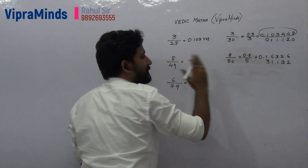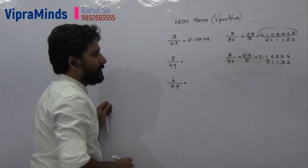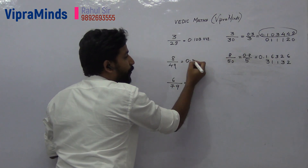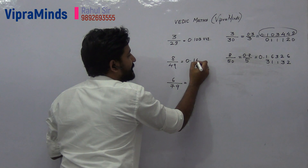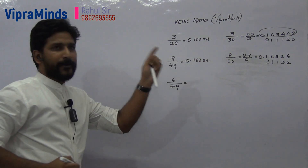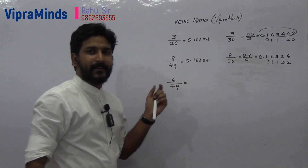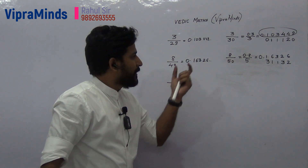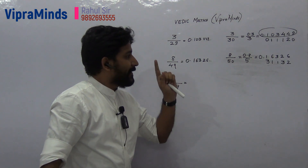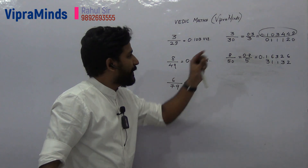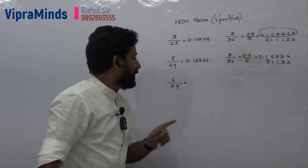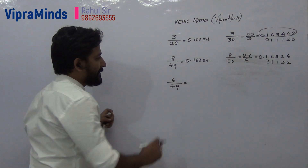Just keep on doing this and you will get the answer. The answer for 8 divided by 49 will be 0.16326 and so on. You will get a recurring term after a certain value. Hope you have understood. It will become even easier if you take more examples.